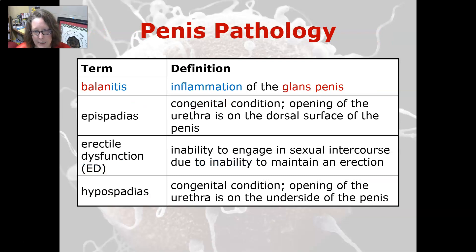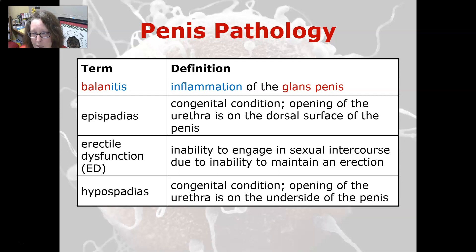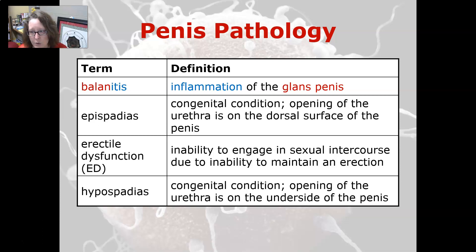Balanitis is an inflammation of the glans penis. Epispadias is a congenital condition — it is an opening of the urethra that is on the dorsal surface of the penis. Erectile dysfunction, or ED, is an inability to engage in sexual intercourse due to an inability to maintain an erection.